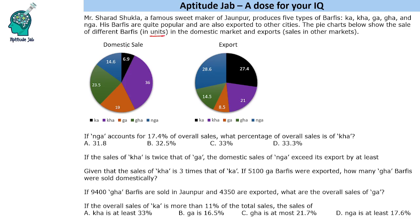These are in units and we are not given the numbers here — we are given conditions. So based on these conditions, we need to answer the questions. The first question is: if Ng accounts for 17.4% of overall sales, what percentage of overall sales is of Kha? In this, we will use allegation.